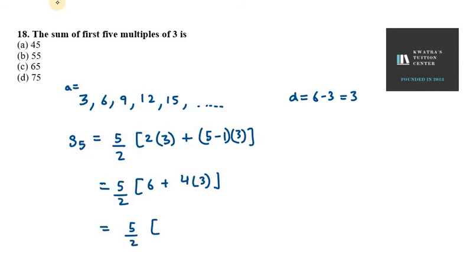Into 6 plus 12. 6 plus 12 is 18. 2 and 18 can be cancelled out. You will get 9. 5 into 9 is 45. So the correct answer is 45.